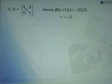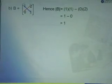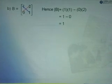So we will take 1 times 1, so we write down 1 times 1 minus 0 times 2. So that will give us 1 times 1 equals 1, 0 times 2 equals to 0. So the answer for the determinant of B is equals to 1.